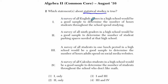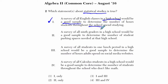The first one says a survey of all English classes in a high school would be a good sample to determine the number of hours students throughout the school spend studying. That's a pretty good one. Most students have to take some type of English class — it's generally a requirement — so you get all types of students from different backgrounds and interests. It's somewhat random, somewhat diverse, and representative of that high school.